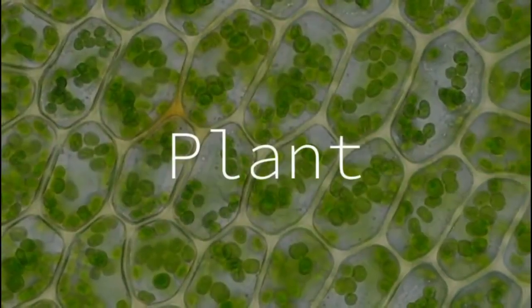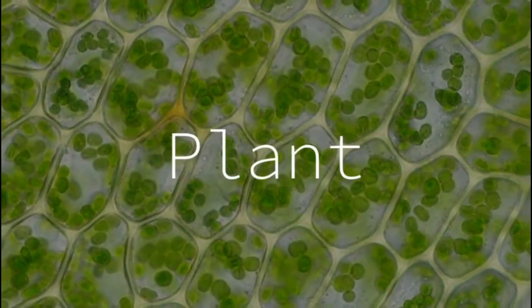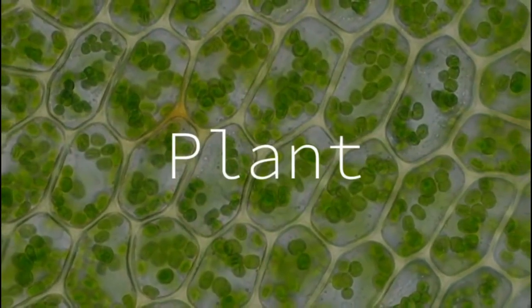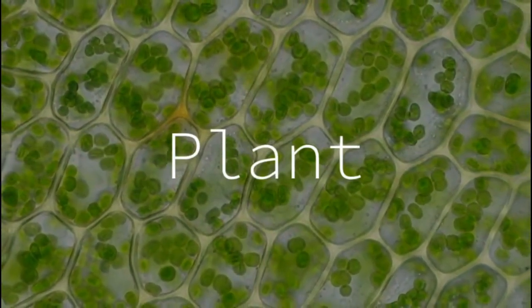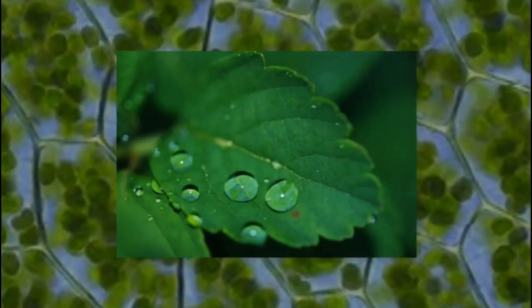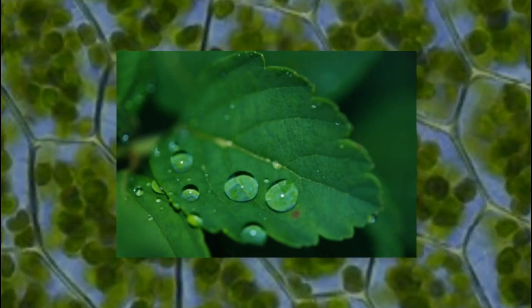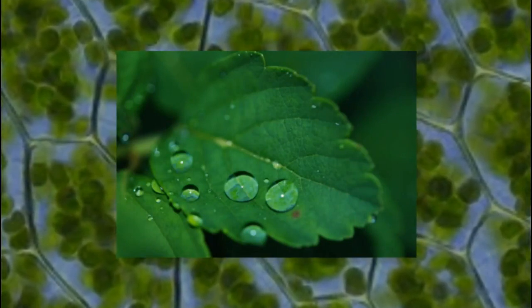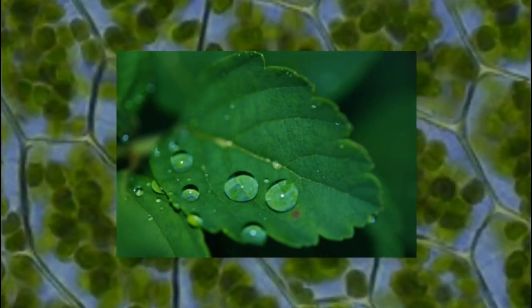In plant cells, if we looked at them closely, we would see lots of little green discs. These are chloroplasts. Chloroplasts collect light energy from the sun. The chlorophyll in them is green. This makes plants green.